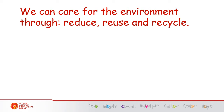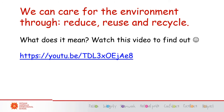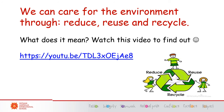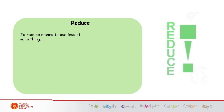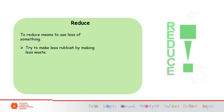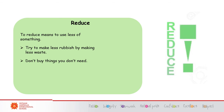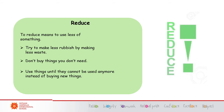We can care for the environment by following the three Rs: reduce, reuse, and recycle. To reduce means to use less of something, to try to make less rubbish by making less waste. Don't buy things you don't need; use things until they cannot be used anymore instead of buying new things.